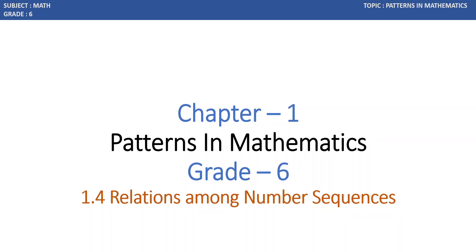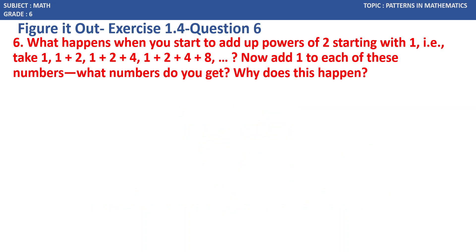Chapter 1, Patterns in Mathematics, Grade 6, section 1.4: Relations Among Number Sequences, Question 6. What happens when you start to add up powers of 2, starting with 1? That is: take 1, then 1 plus 2, then 1 plus 2 plus 4, then 1 plus 2 plus 4 plus 8. So we are adding powers of 2: 2 power 0, 2 power 1, 2 squared, 2 cubed, and so on. Now we add 1 to each of these numbers — what numbers do you get?